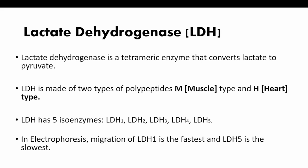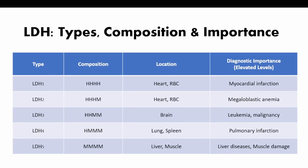LDH1 has four H subunits (H4); LDH2 is H3M; LDH3 has 2H and 2M; LDH4 has 1H and 3M; and LDH5 is all M type (M4). The locations are: LDH1 in heart and RBC, LDH2 also in heart and RBC, LDH3 in brain, LDH4 in lungs and spleen, and LDH5 in liver and muscle.